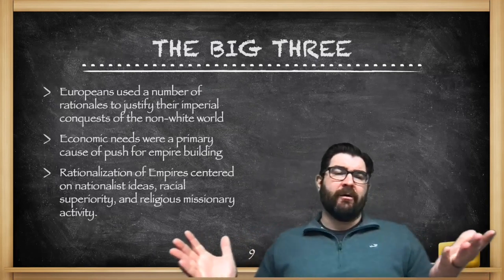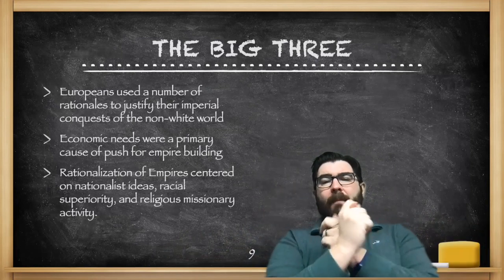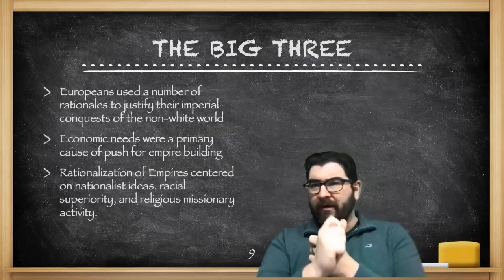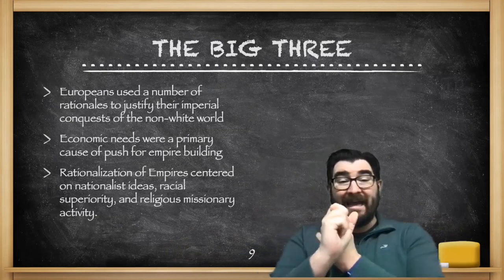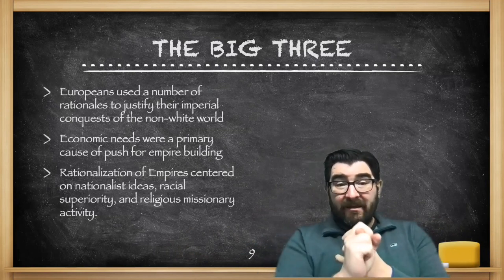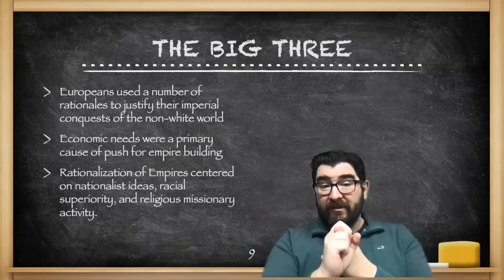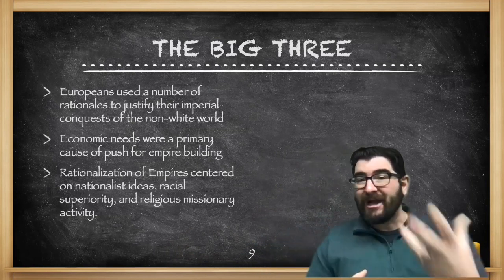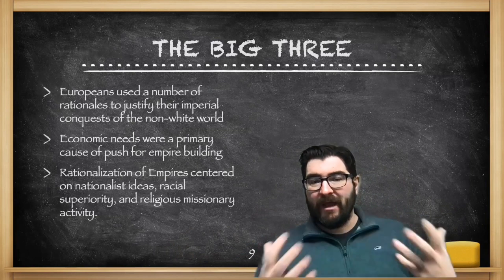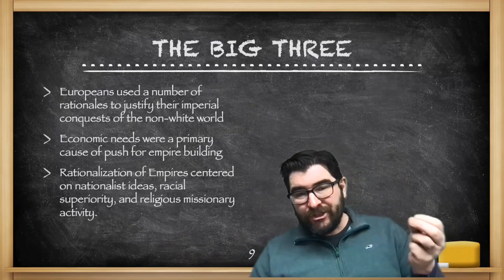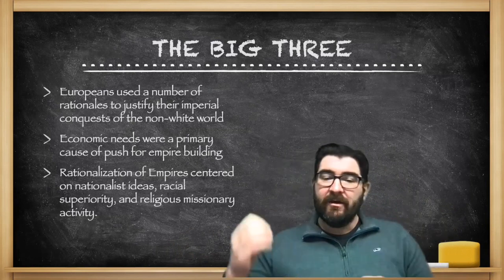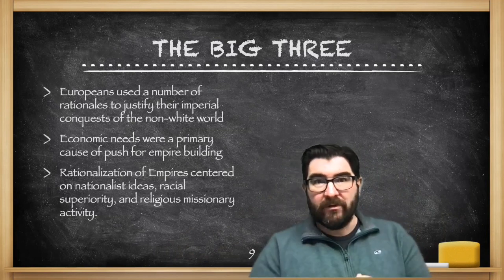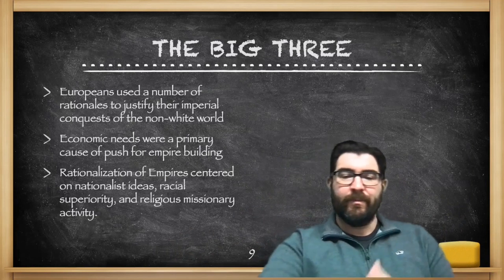So what do we take from this? Europeans used a number of rationales to justify their domination of the non-white world. Economic needs were a primary cause of this push for empire building, and rationalizations for creating empires centered on nationalist ideas, racial superiority, and the quest to convert people to Christianity. We'll see you next time.